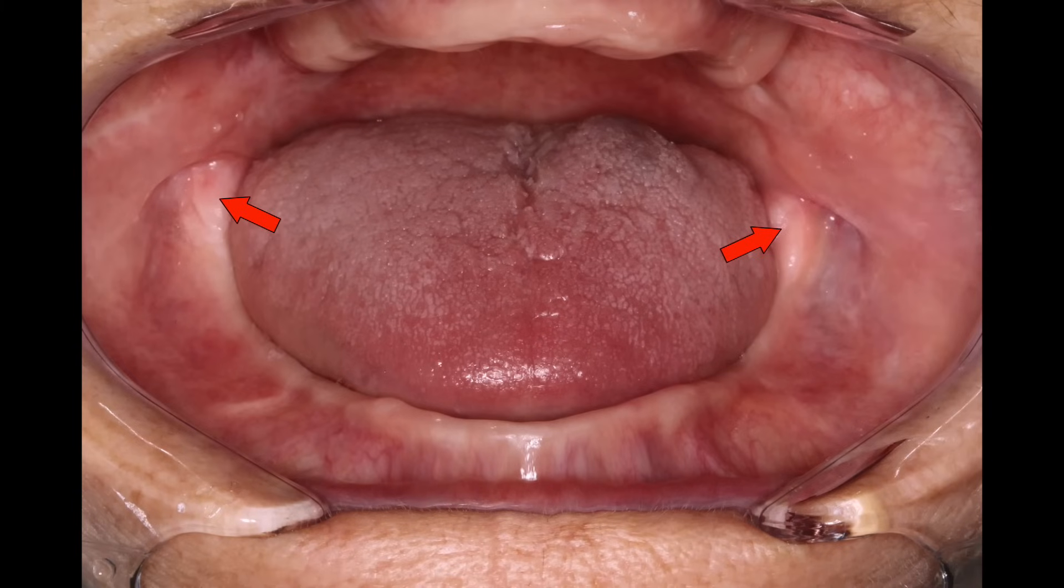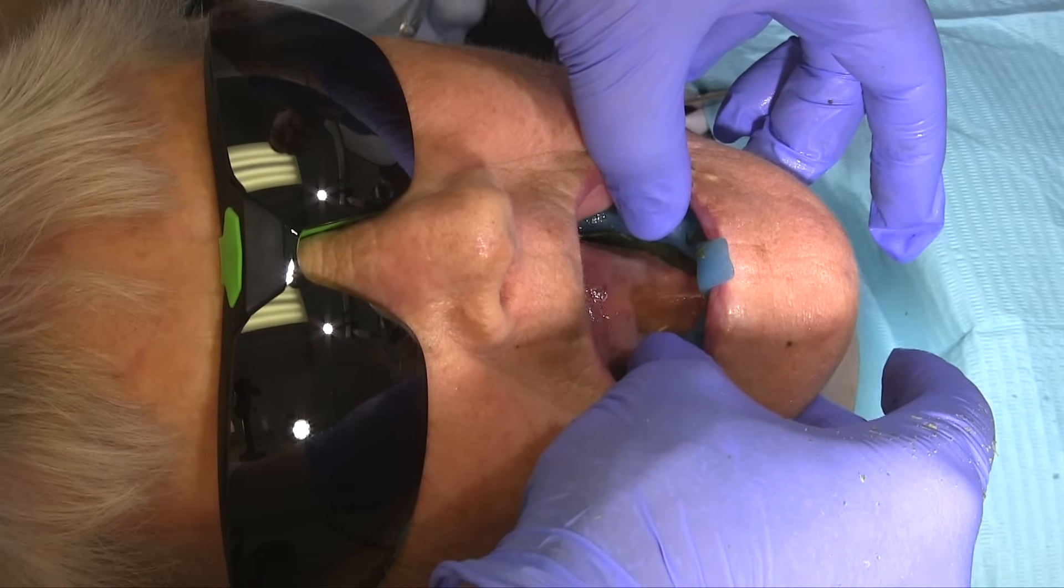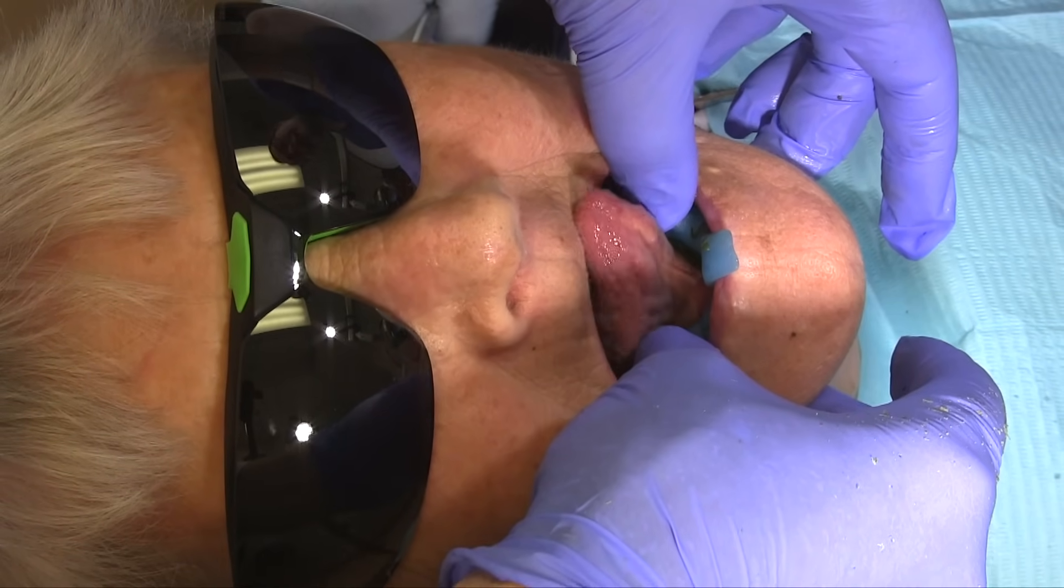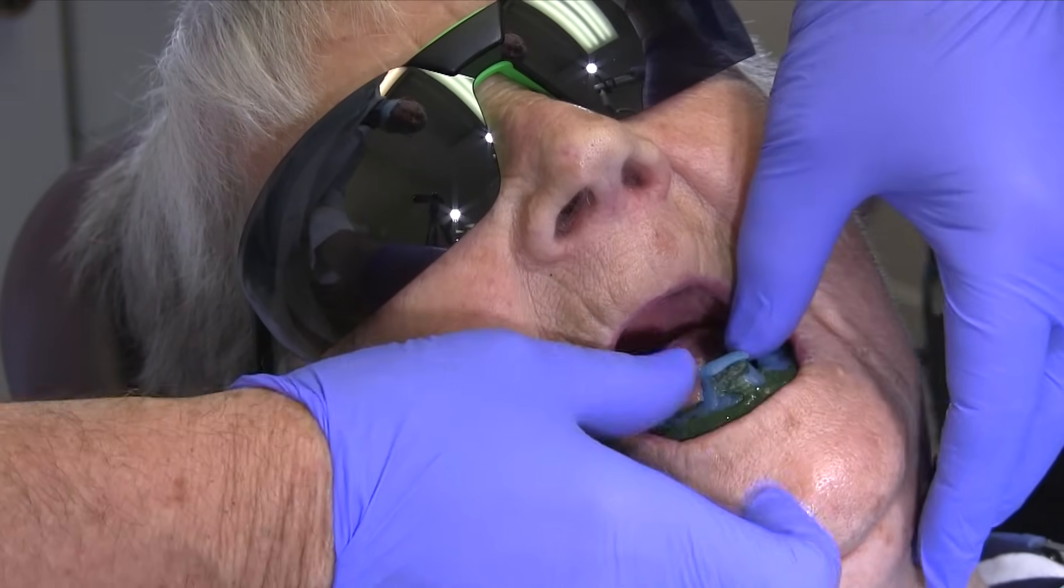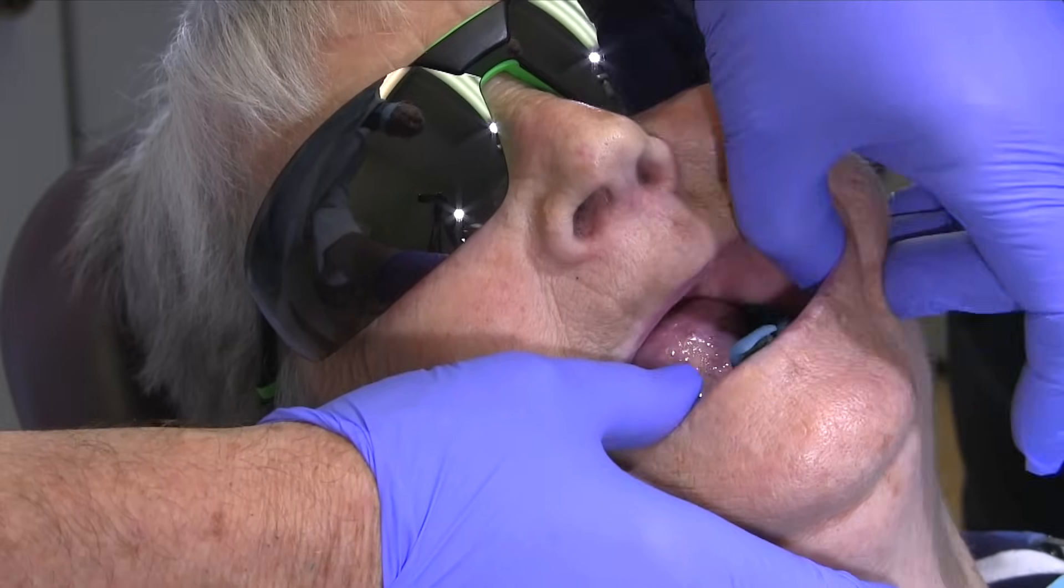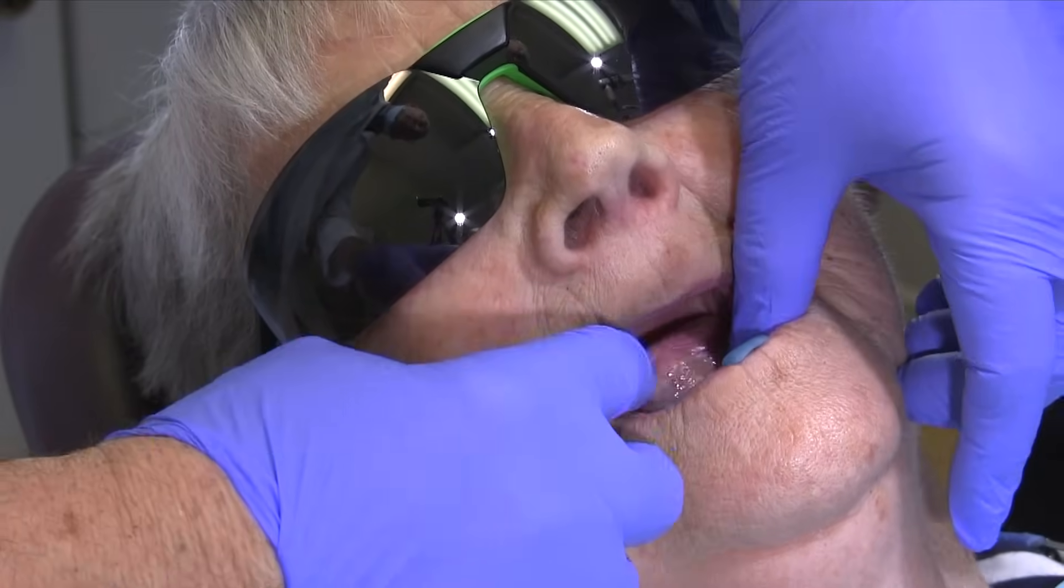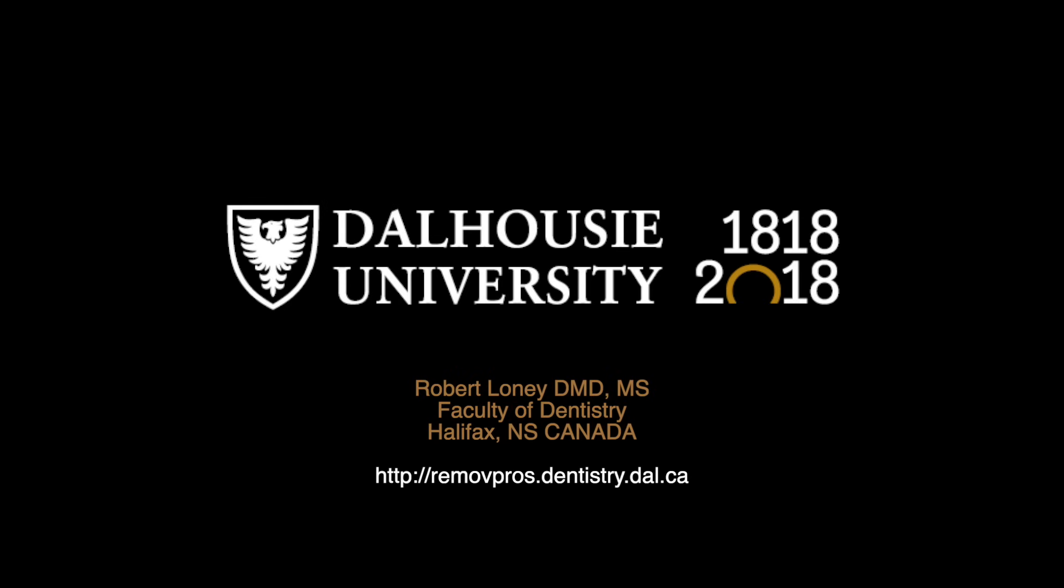The retromolar pads should be covered at least partially to provide a seal and comfort. When completed, the border molded tray should not lift with normal tongue movements. Most mandibular arches don't provide the retention of a maxillary arch. Nonetheless, if there is a good ridge and you follow the steps I've outlined, you can develop surprising retention.